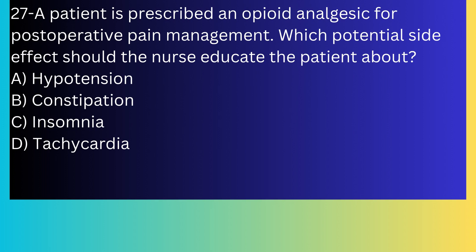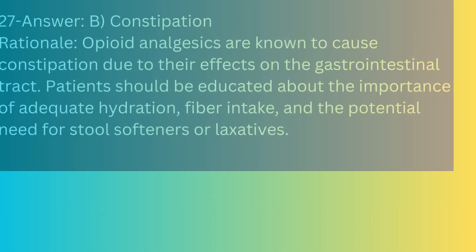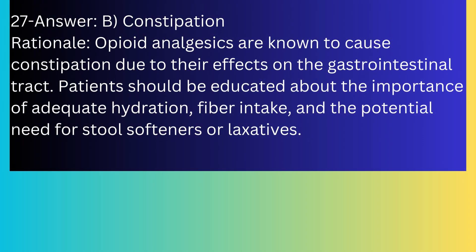Question number twenty-seven: A patient is prescribed an opioid analgesic for post-operative pain management. Which potential side effect should the nurse educate the patient about? A) Hypotension, B) Constipation, C) Insomnia, D) Tachycardia. The answer is B, constipation. Opioid analgesics are known to cause constipation due to their effects on the gastrointestinal tract. Patients should be educated about the importance of adequate hydration, fiber intake, and the potential need for stool softeners or laxatives.